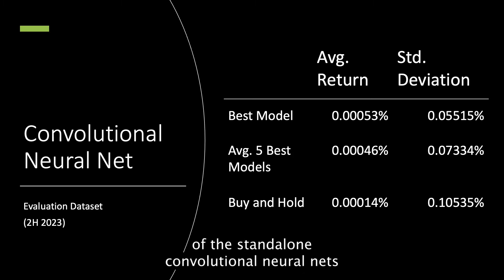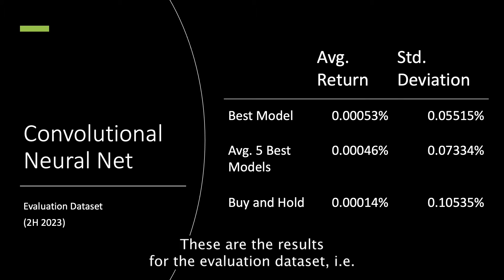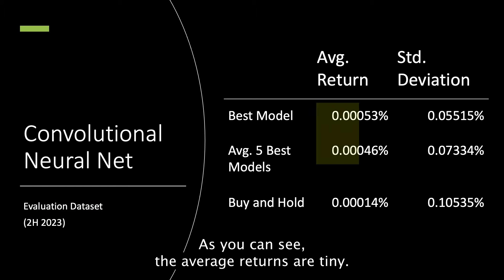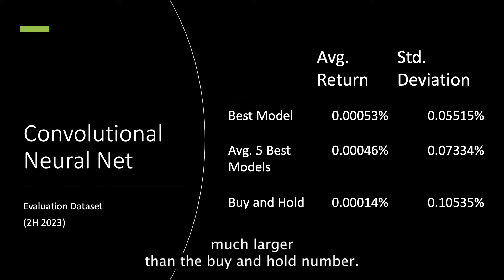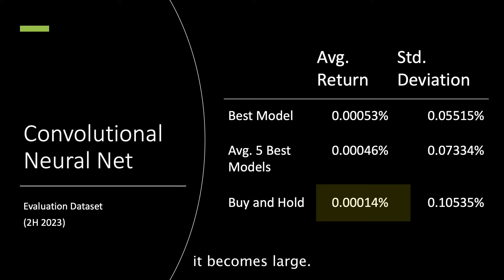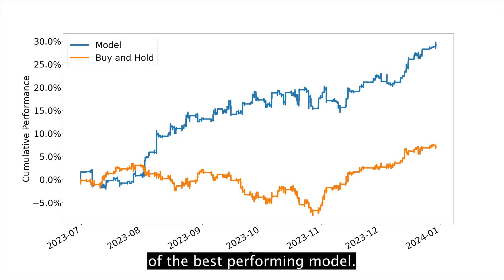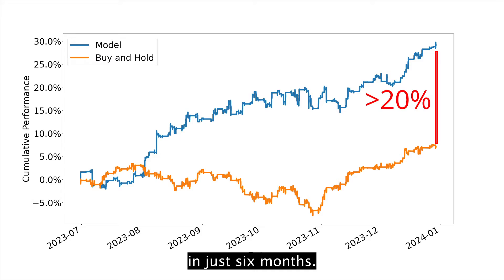Here are the results of the standalone convolutional neural nets with the best set of hyperparameters — these are the results for the evaluation dataset, i.e., the best exam results. The average returns are tiny; the best model seems to have gained about 0.0005% per minute. But this tiny number is much larger than the buy-and-hold number, and when accumulated across a long time span, it becomes large. The best performing model outperformed buy-and-hold by over 20% in just six months.